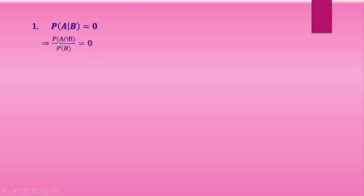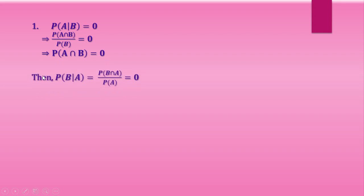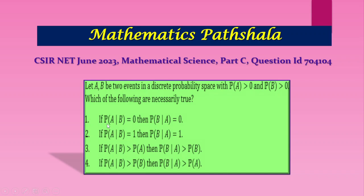Option 1: if the conditional probability of A given B, that is P(A|B) = 0, then by the definition of conditional probability this implies P(A∩B) / P(B) = 0, which implies P(A∩B) = 0. Then P(B|A) = P(B∩A) / P(A) = 0. So if P(A|B) = 0 then P(B|A) = 0. Option 1 is correct.